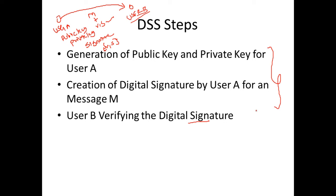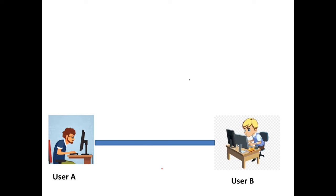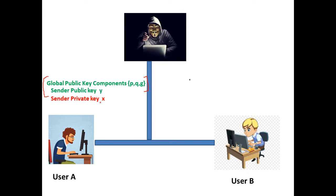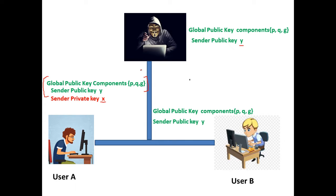We'll go step by step and understand this algorithm. There is also an animation to help understand it better. User A and user B are communicating using an insecure channel, meaning a third party hacker is listening. The first step is user A generates global public key components P, Q, G and a public key Y — all of these are public.